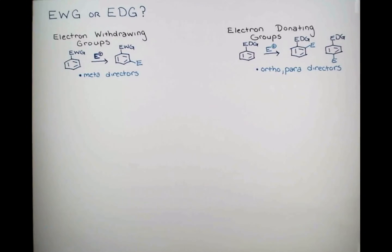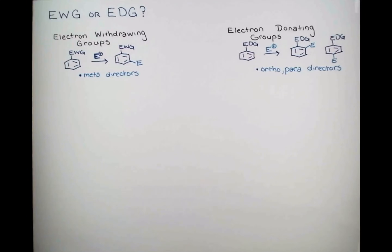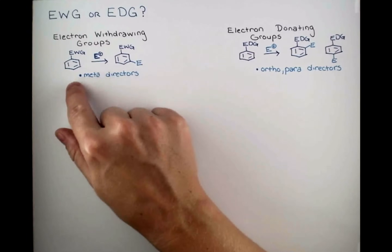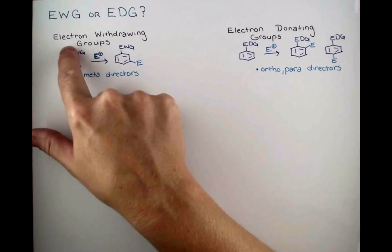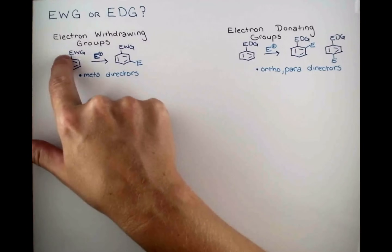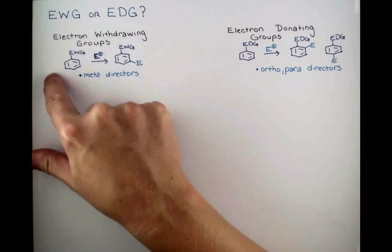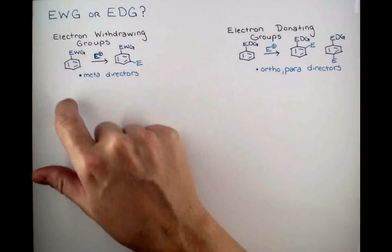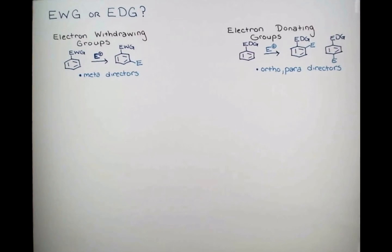Electron withdrawing groups are just how they sound — they pull electrons out of the ring. And so electron withdrawing groups actually make it harder for the ring to undergo EAS. The electrons are being pulled up toward this electron withdrawing group out of the ring, and so it's less reactive.